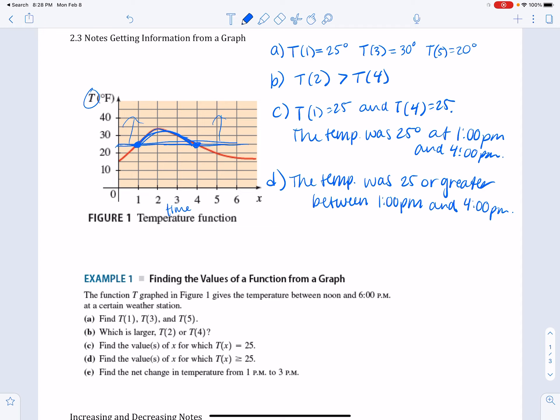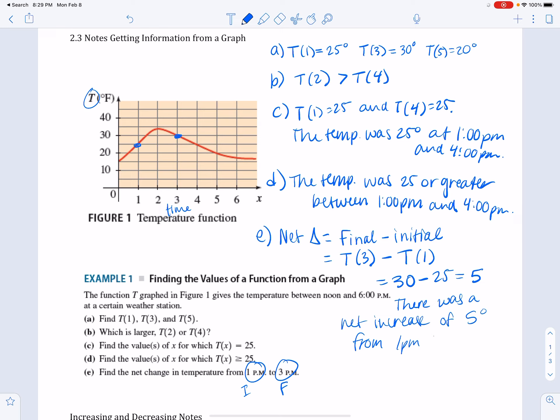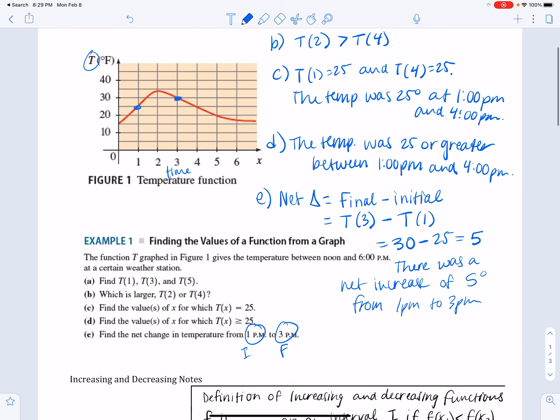And then Part E: find the net change in temperature from 1 to 3 p.m. So remember, 1 is our initial value and 3 is our final value, so we need to do it in order. Net change equals final minus initial, so that needs to be temperature at 3 p.m. minus temperature at 1 p.m. So that's going to be 30 minus 25, which equals 5. We can write this in a sentence: there was a net increase of 5 degrees from 1 p.m. to 3 p.m., and it's an increase because your answer was a positive value.